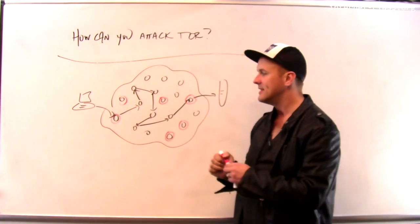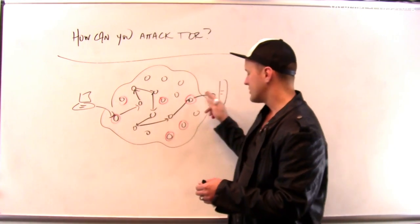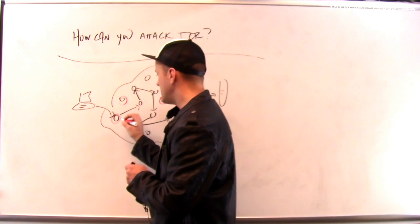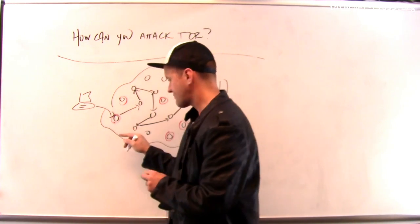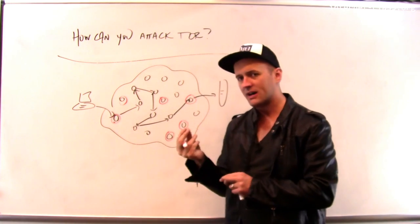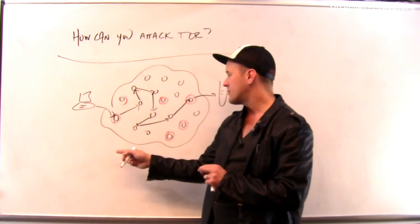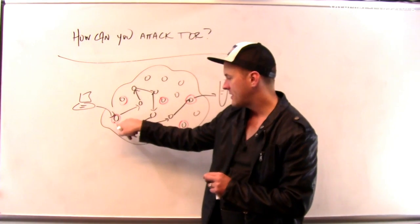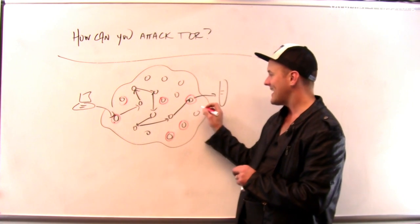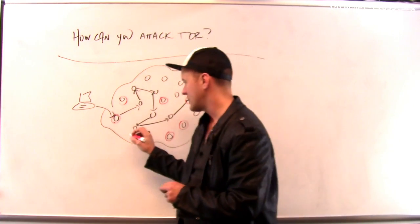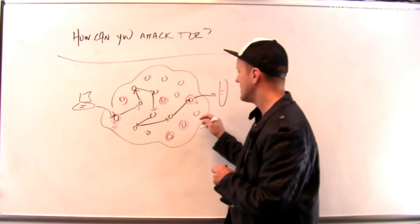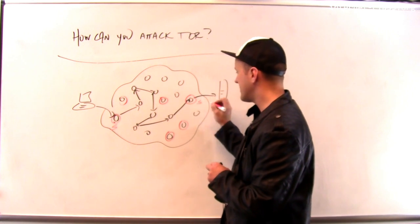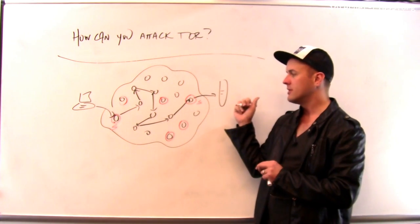Because what the attackers did is they used this control over the circuit to inject a little bit of information. On their entry nodes, they would modify the headers of the Tor protocol in a way that they could observe on the exit node. And so this piece of information now flows through the network. Let's put a little S on this packet.